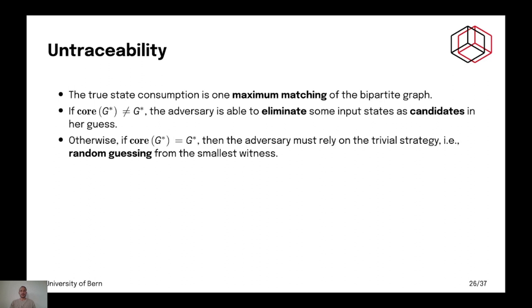So, the true state consumption is one maximum matching. And if the core of the bipartite graph G star is not equal to G star, then the adversary is able to trim some input states as candidates in our guess. Otherwise, if the core of G star is equal to G star, then the adversary must rely on the trivial strategy.